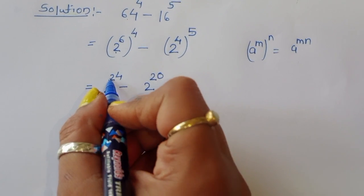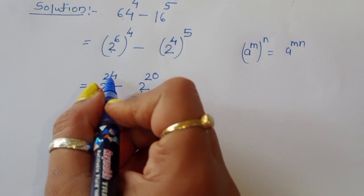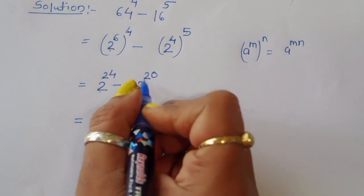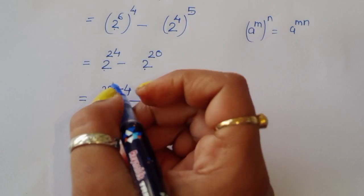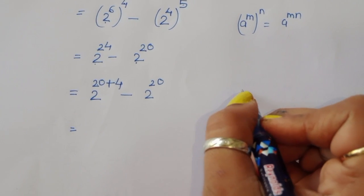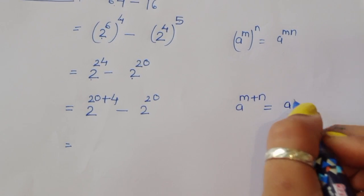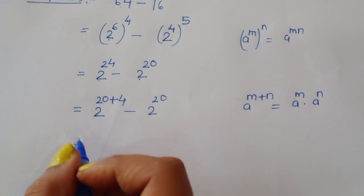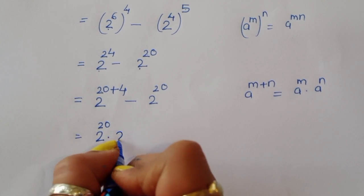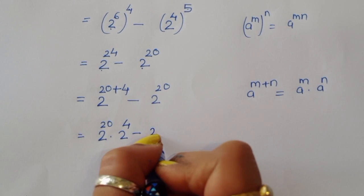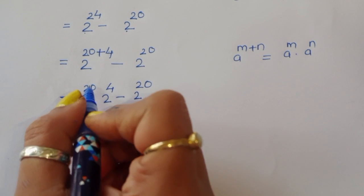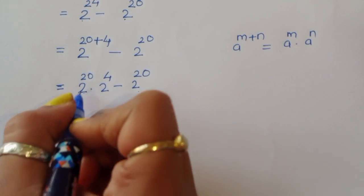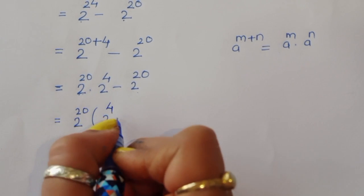We have 2 power 24 minus 2 power 20. We can convert 2 power 24 as 2 power 20 plus 4. Using the formula a power m plus n equals a power m times a power n, since the base is the same, we write 2 power 20 times 2 power 4 minus 2 power 20. Taking 2 power 20 as common, the remaining term is 2 power 4 minus 1.